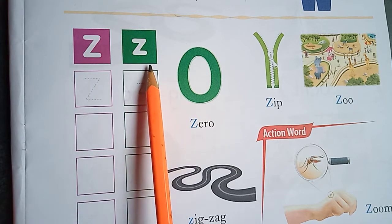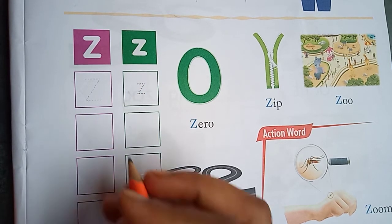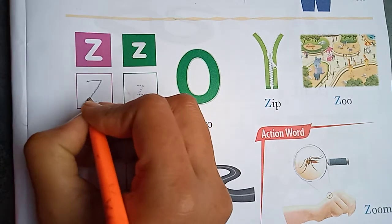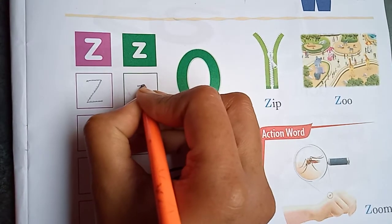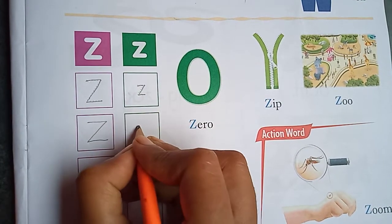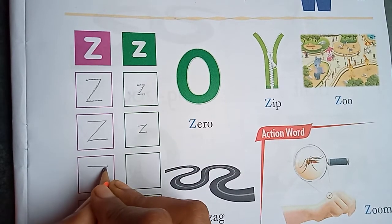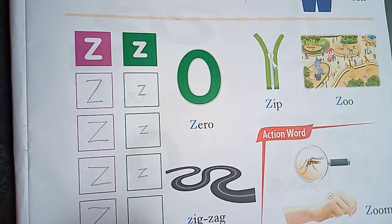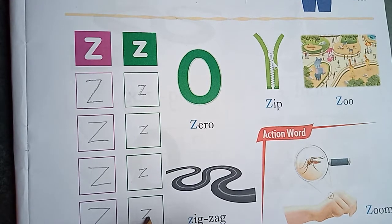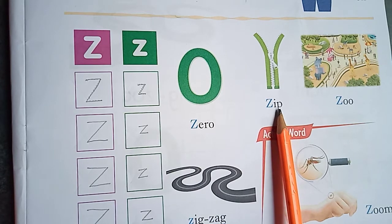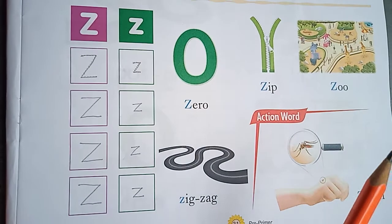Capital Z, small Z — okay. Capital Z, small Z. Z for zero, Z for zip, Z for zoo, Z for zigzag, Z for zoom.